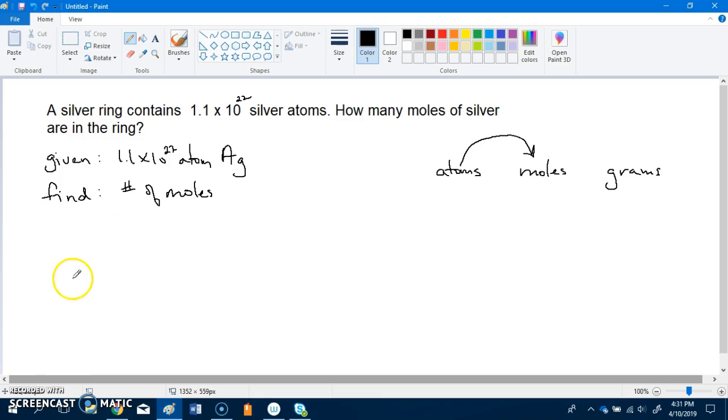So when we're setting up our equation we always start with our given, which is 1.1 times 10 to the power of 22 atoms of silver. We're going to multiply by a conversion factor that will give us moles as our answer. So we're going to look at atoms to moles as our conversion factor, and we know that 6.022 times 10 to the 23 atoms is equal to 1 mole.